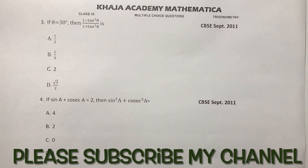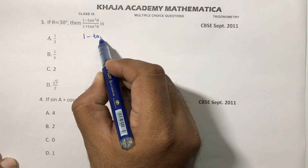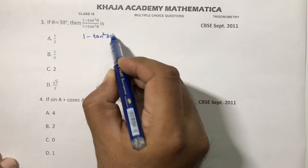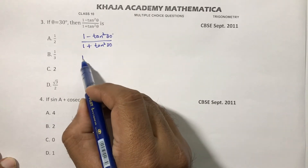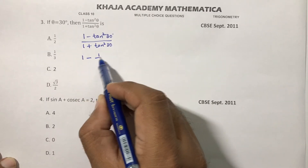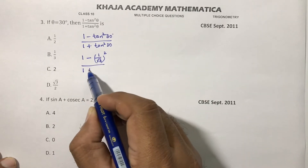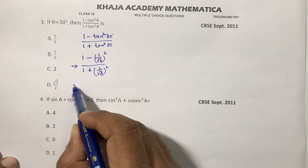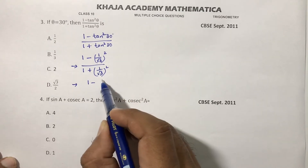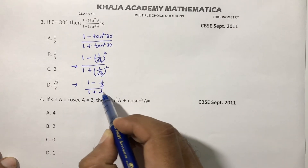If theta equals 30 degrees, then find 1 minus tan squared theta by 1 plus tan squared theta. In place of theta, substitute tan 30 which is 1 by root 3. So: 1 minus 1 by root 3 squared over 1 plus 1 by root 3 squared, which gives 1 minus 1 by 3 over 1 plus 1 by 3.